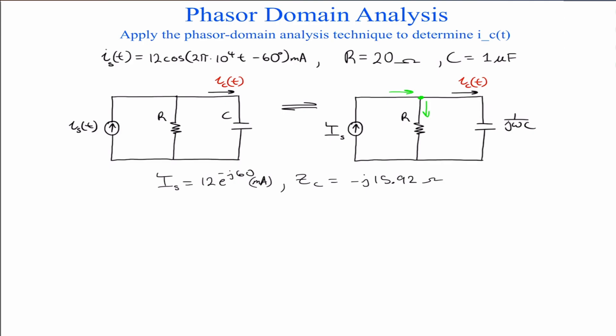So we can then go ahead. Where we have the green, we can apply KCL at that branch. So we can say I_s is equal to the current through the resistor plus the current through the capacitor.